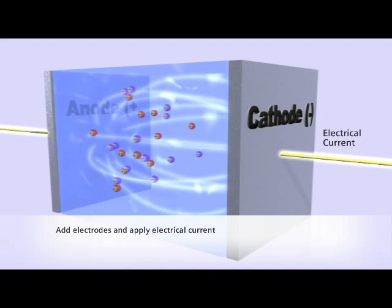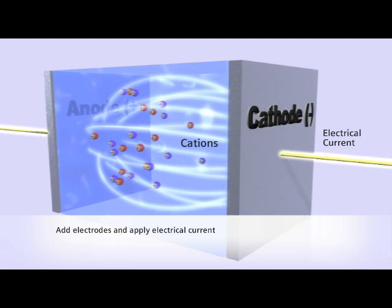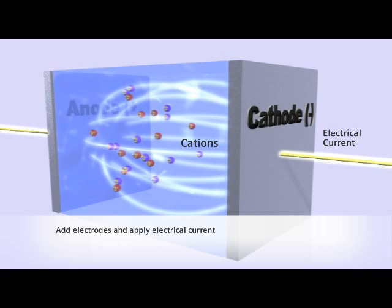the electric field drives the cations in the direction of the cathode, and at the same time, drives the anions in the opposite direction, toward the anode.